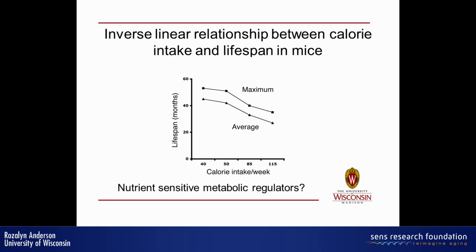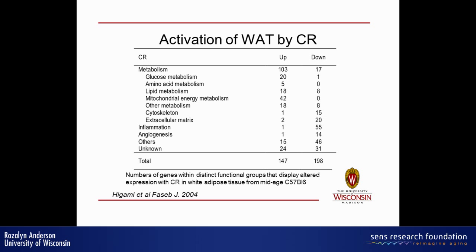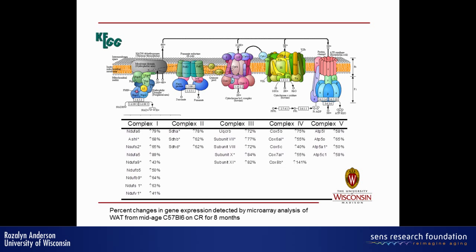The inspiration for our metabolic view of aging and the mechanisms of CR came from some work done in adipose tissue in mice. There's a massive activation of genes involved in metabolism in adipose tissue. You can see, borrowed from the KEGG pathway, that components of the mitochondrial electron transport chain involved in oxidative phosphorylation are coordinately re-regulated. This is telling us that the mitochondria are different in CR animals — in fat from CR animals.